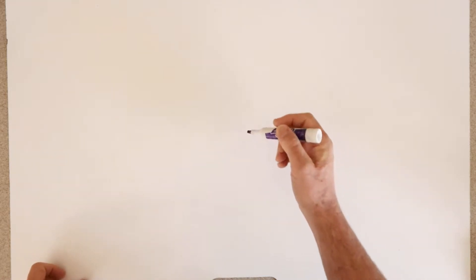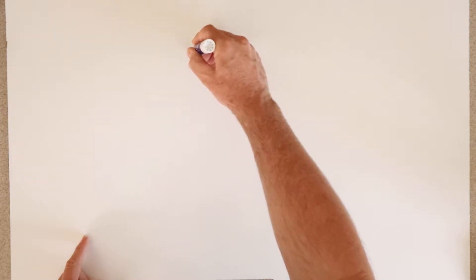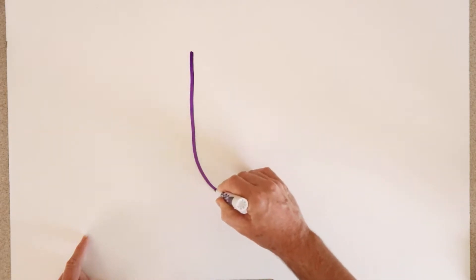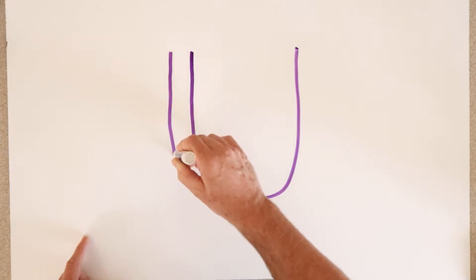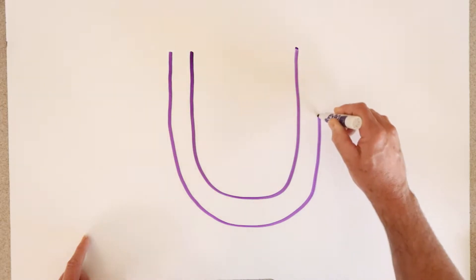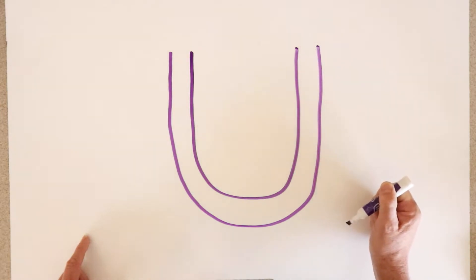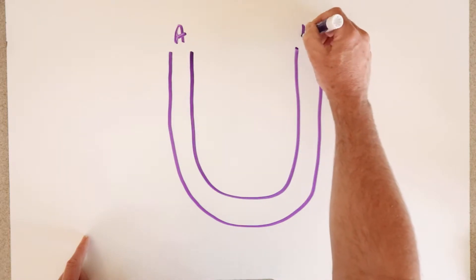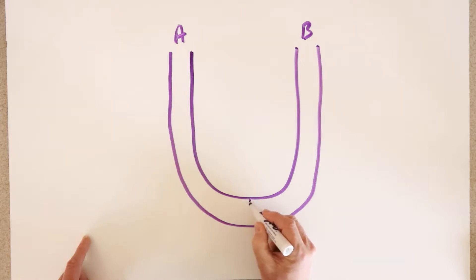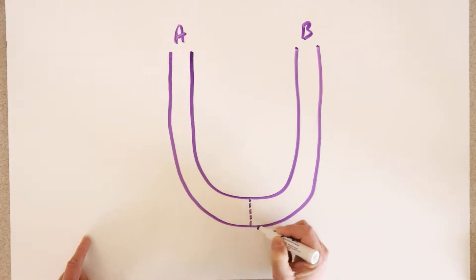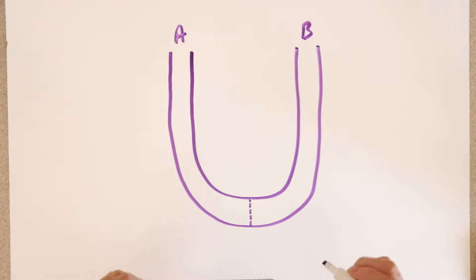We're going to do a U-tube problem to help you understand osmosis. I'm going to draw a U-tube — a glass tube that is U-shaped, not the online website. There's a U-tube and I'm going to call this side A and this side B, and I'm going to separate side A from side B with a selectively permeable membrane — that's a membrane which allows some things to pass and not others.